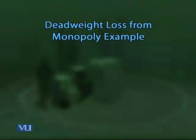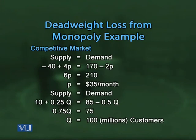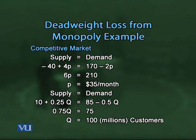In the competitive market, equating supply and demand gives a price of $35 per month and a quantity of 100 million customers. So at a monthly price of $35, the number of customers using the service equals 100 million.